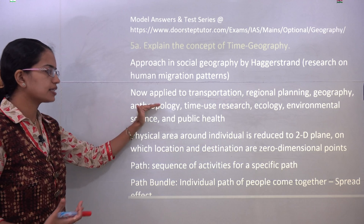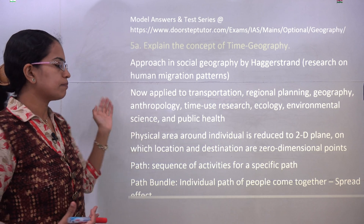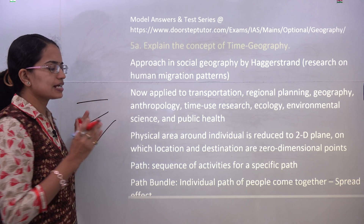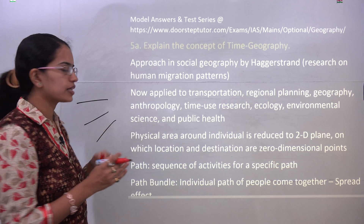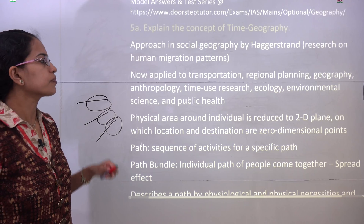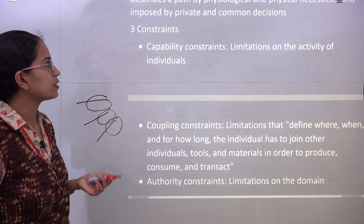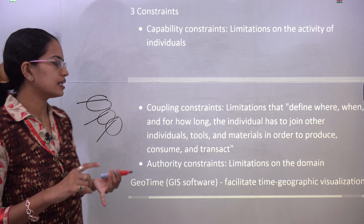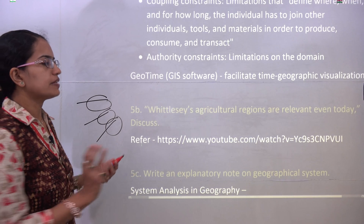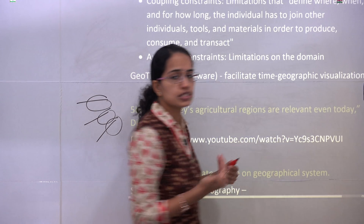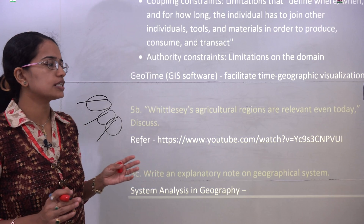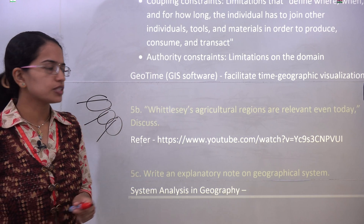He talked about the path and the path bundle. Under path bundle, he said that each individual person or individual path has a set of people who are coming together, and each of these paths has a kind of spread effect. He also talked about three constraints: capability, coupling constraint, and authority constraint. When including recent happenings, you must include the GIS software GeoTime, which talks about time-spatial visualization. All those things are very important for this question.